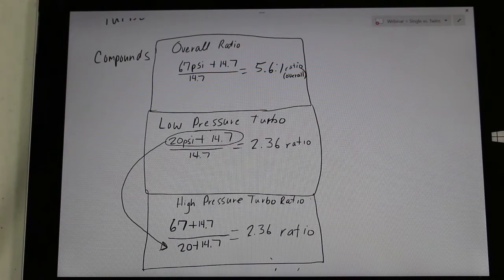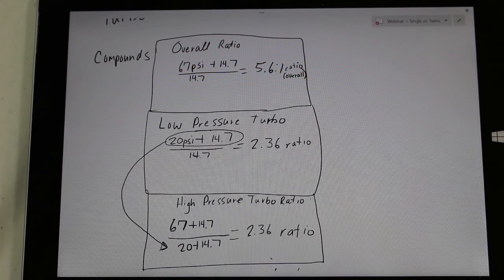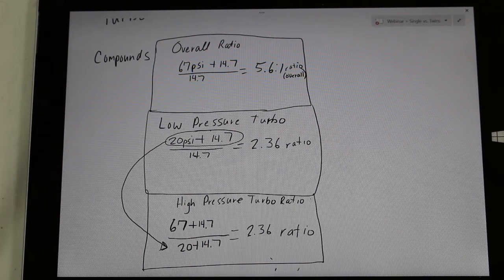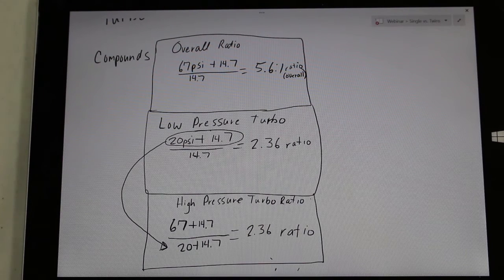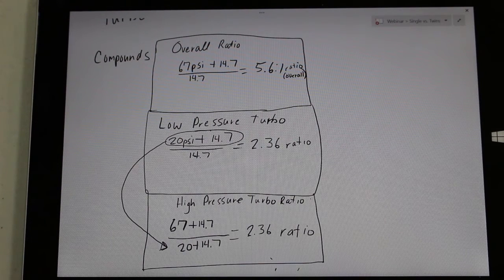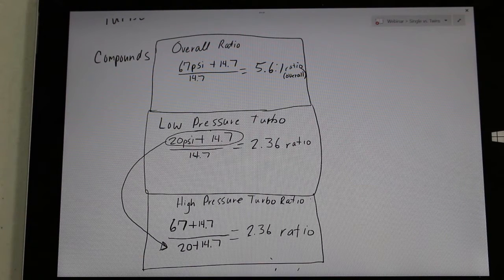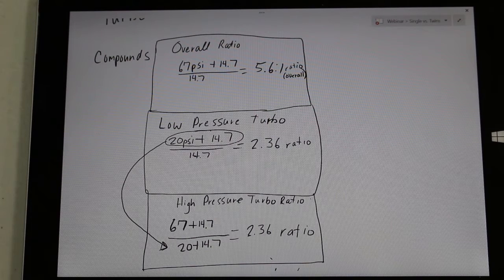You've got to understand that pressure ratio is everything in a turbocharger, because that's how the turbo deals with atmospheric pressure, and the speed of the turbo and the efficiency overall. In this example, of the overall pressure ratio at 67 PSI on each turbo, each turbo is running at 2.36 to 1 ratio, which is a very efficient speed.